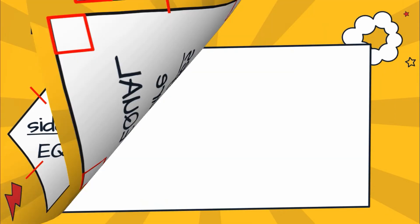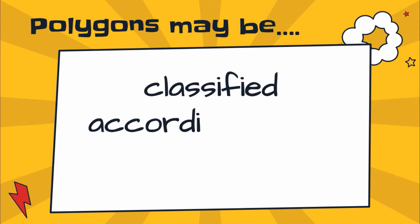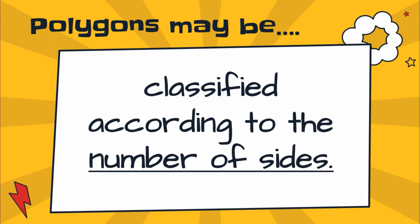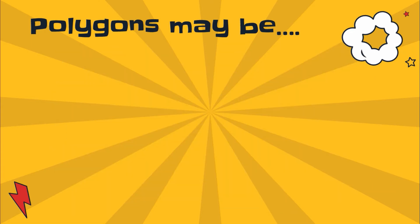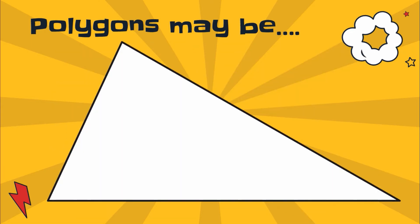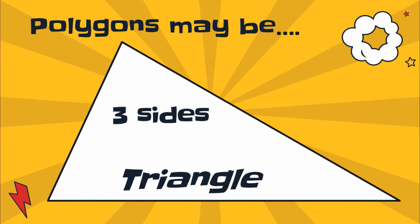Now next, let's try to identify the following. Polygons may also be classified according to the number of sides. What are the polygons we know? Let's have the first one: the triangle. Triangle is a polygon with three sides. When you see a polygon with three sides, we call it a triangle.